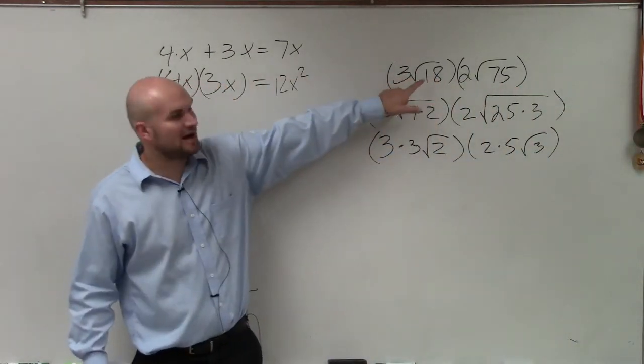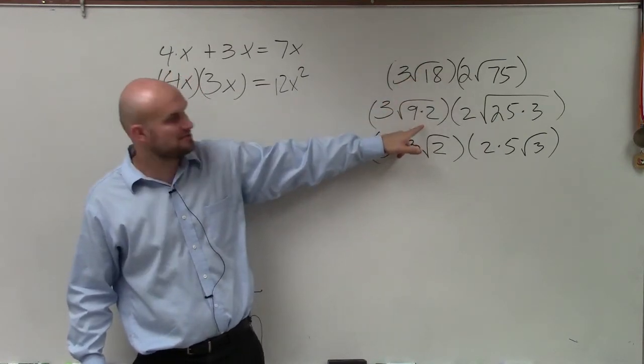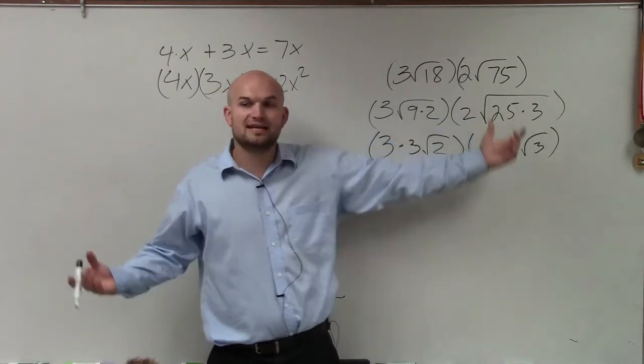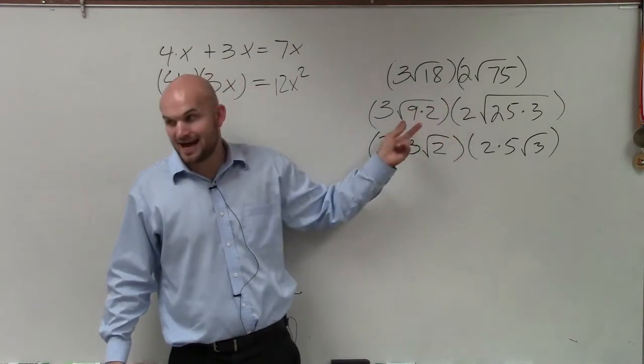So again, make sure you follow as far as the square root of 18. I broke down to square root of 9 times 2. Square root of 75, I rewrote as 25 times 3. And again, the reason why I chose that is because 25 is a square number and 9 is a square number.